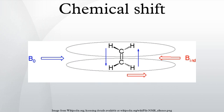This is reflected in the spin energy levels. The variations of nuclear magnetic resonance frequencies of the same kind of nucleus, due to variations in the electron distribution, is called the chemical shift.